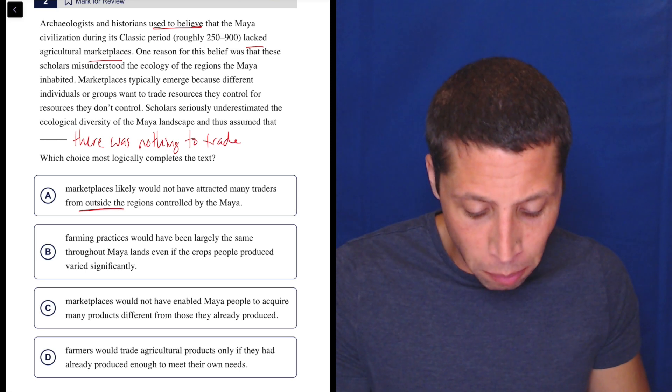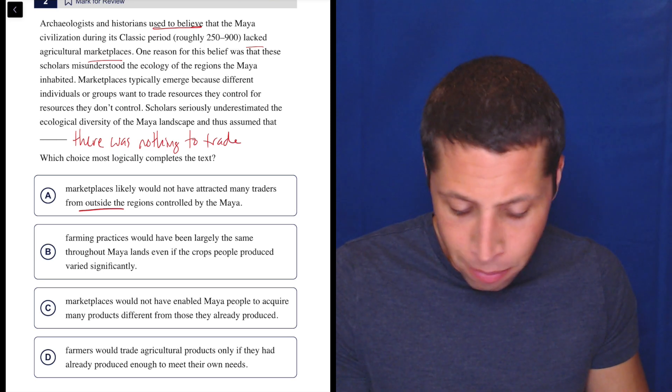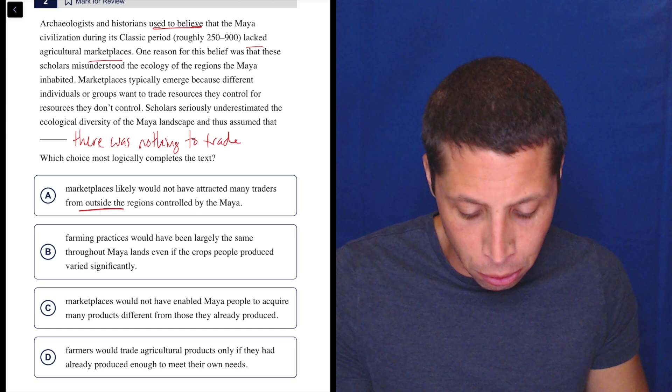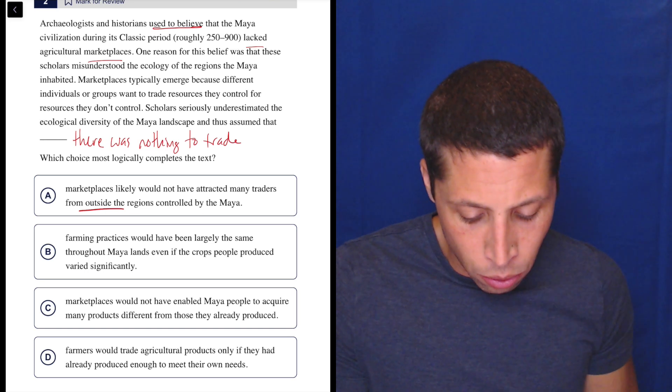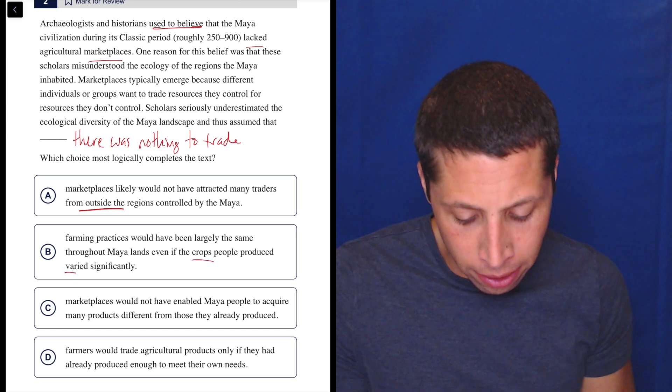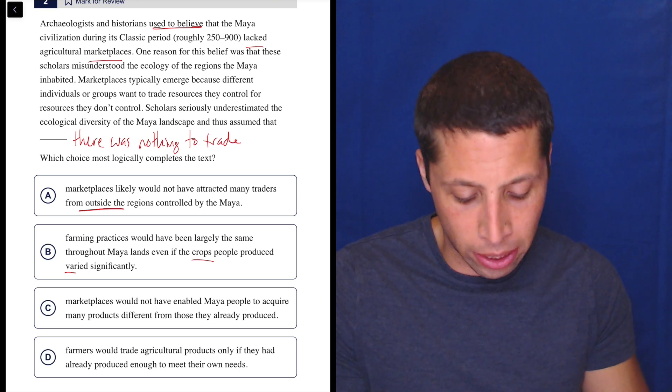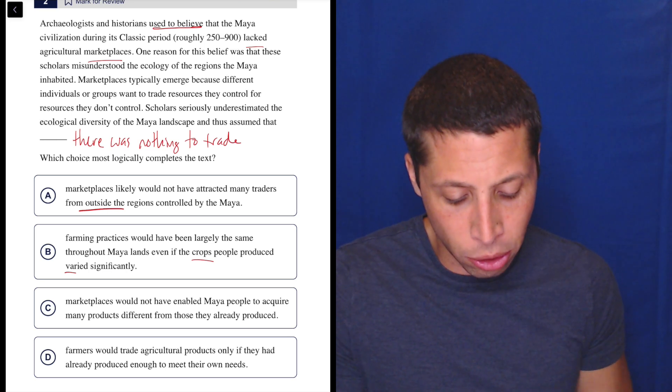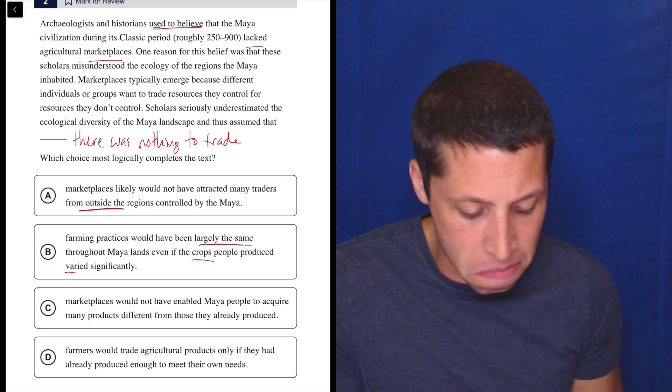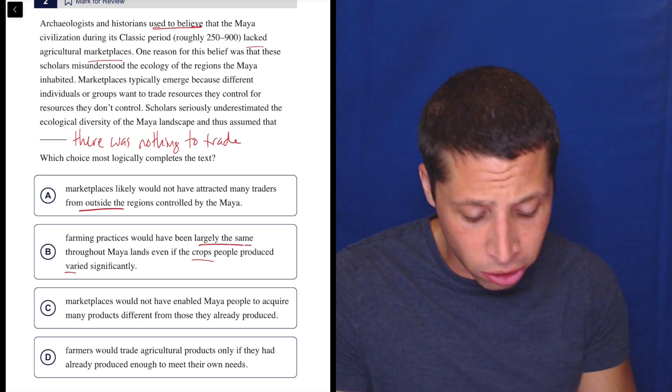B, did they assume that farming practices would have been largely the same throughout the Maya lands, even if the crops people produced varied significantly? Well, if the crops varied, that seems like the marketplace would be there, right? We would then have a diversity because there would be stuff to trade. So that makes no sense.